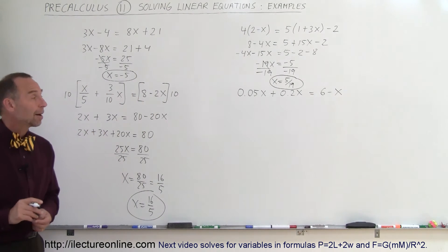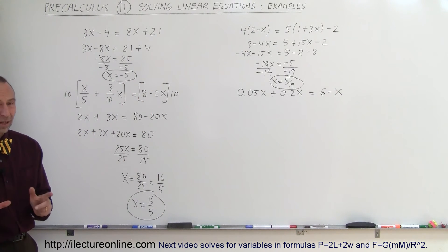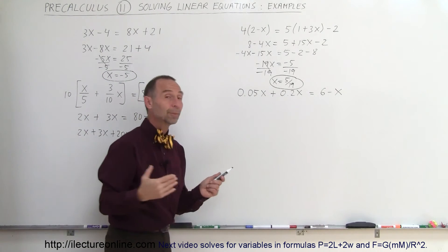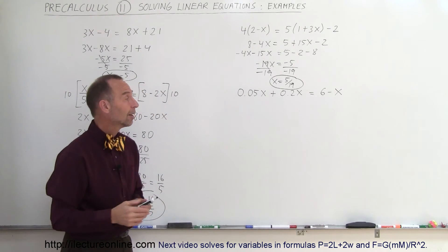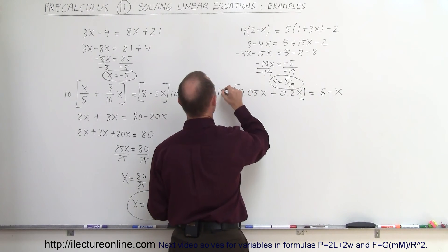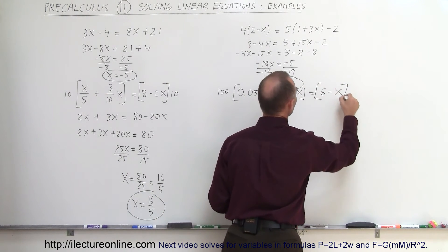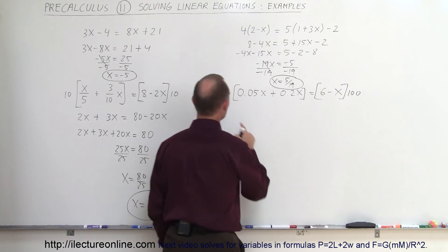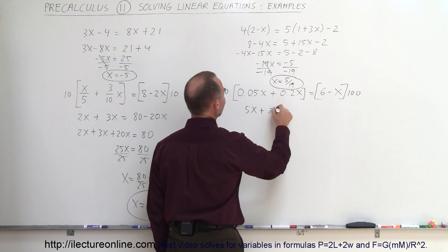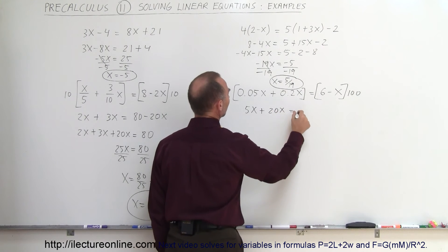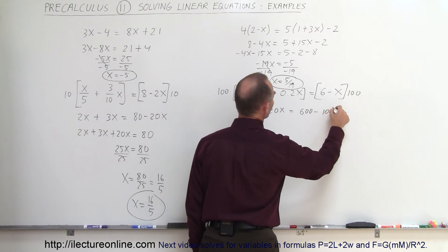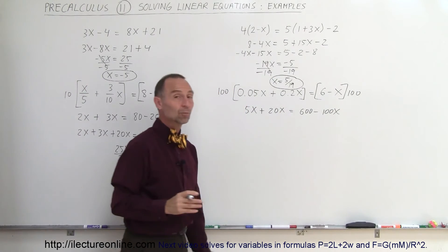And finally on this example, notice we have some decimals — we want to get rid of those. In this case we have two decimal places, which means we're going to multiply both sides by 100. Multiply the left side by 100 and multiply the right side by 100. So 100 times this becomes 5x plus 20x is equal to 600 minus 100x.